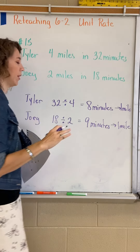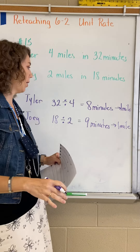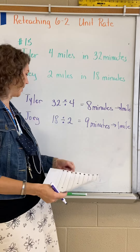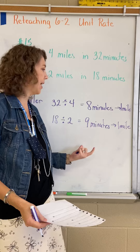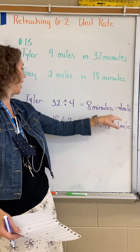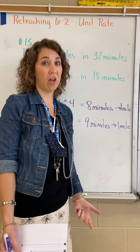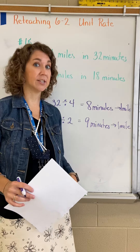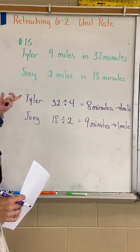Sometimes when we look at these problems we look for the higher number, sometimes we look for the lower number. If I ask which one has the greater unit rate, the greatest unit rate would be Joey — but that's not who's the fastest. Joey's mile is nine minutes but Tyler's mile is eight minutes. So we're talking about running, we want the lowest time. The faster person goes in the lowest time. So who is the faster runner in this situation?